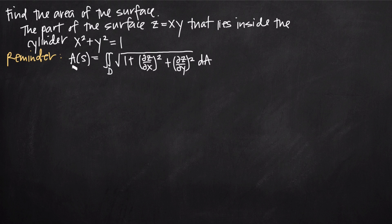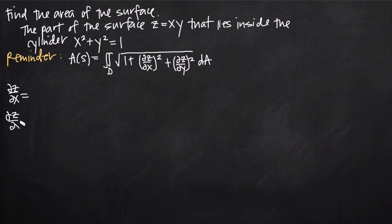As a reminder, I've written the formula we're going to be using to find the area of the surface. This formula is for the area A of the surface S. The first thing we need to realize is that this equation involves partial derivatives of z with respect to x and y. We've been given an equation for z, so we can take those partial derivatives.